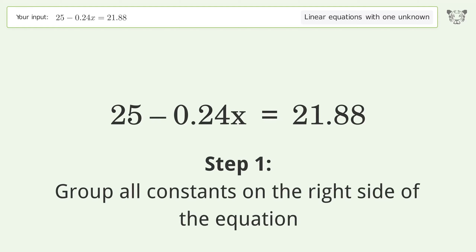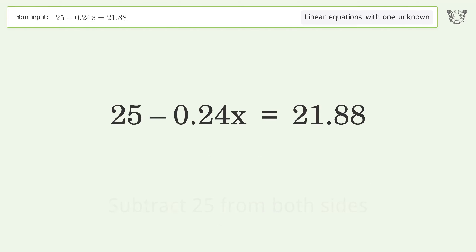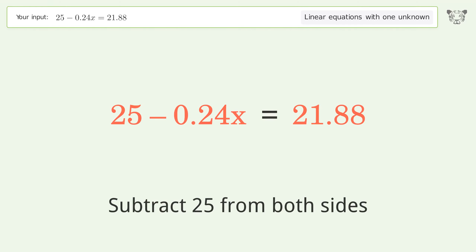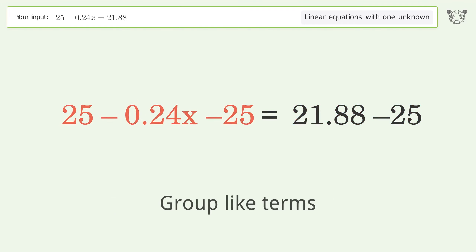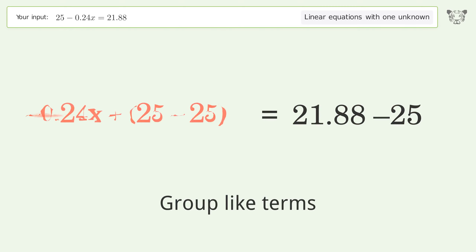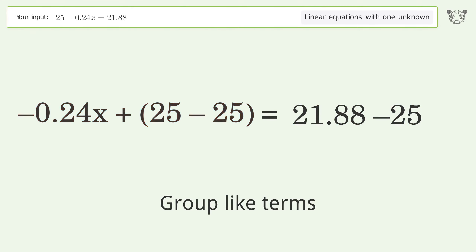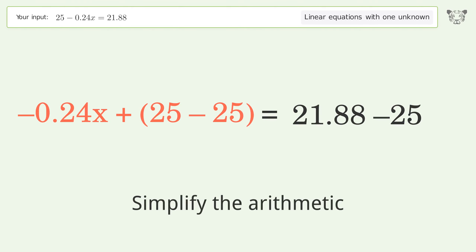Group all constants on the right side of the equation — subtract 25 from both sides. Group like terms, then simplify the arithmetic.